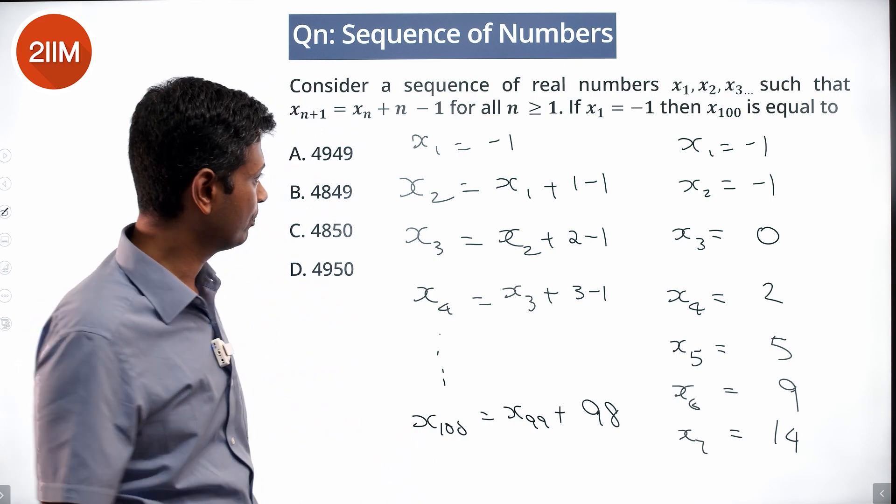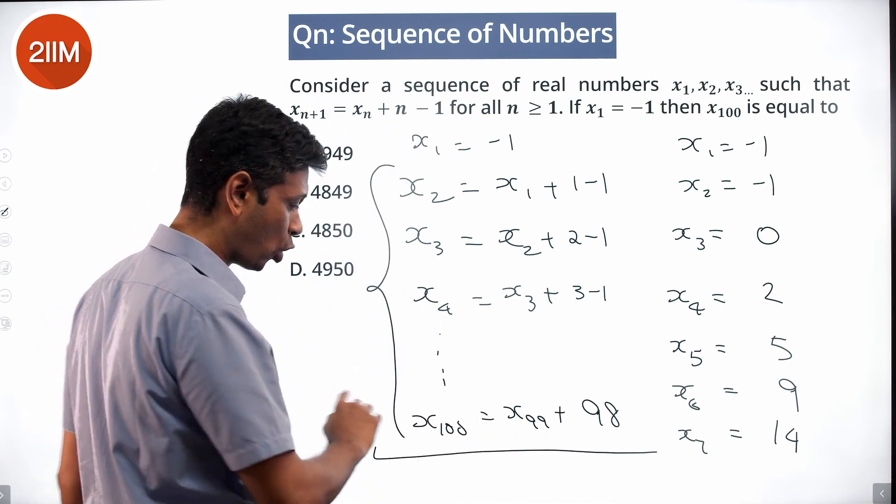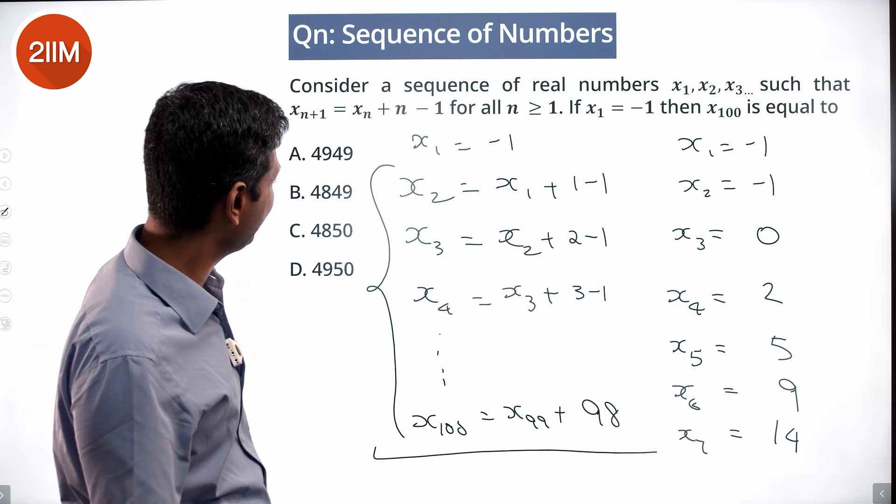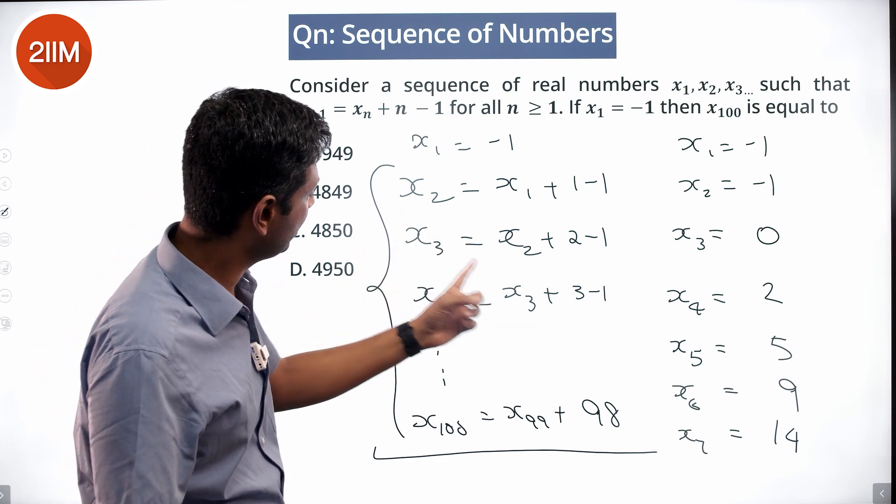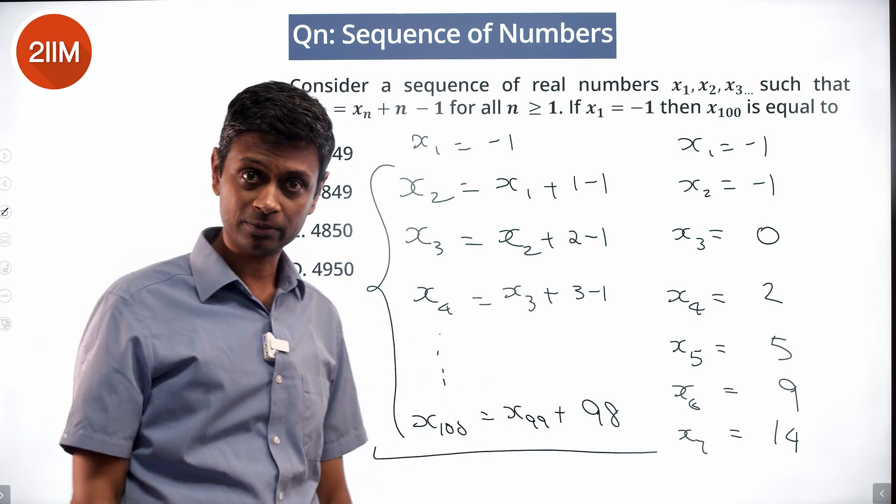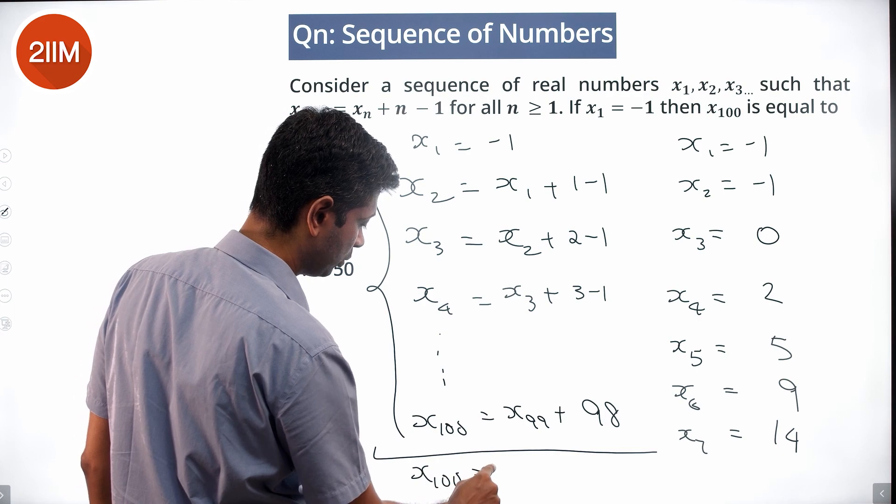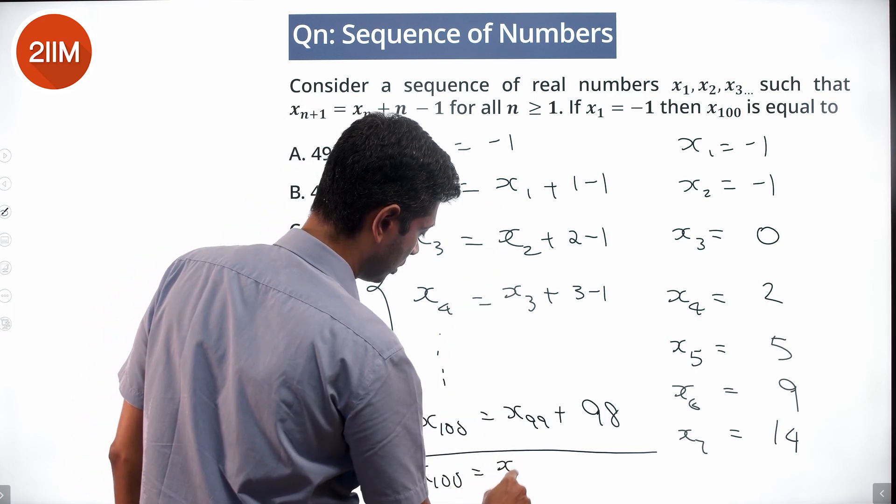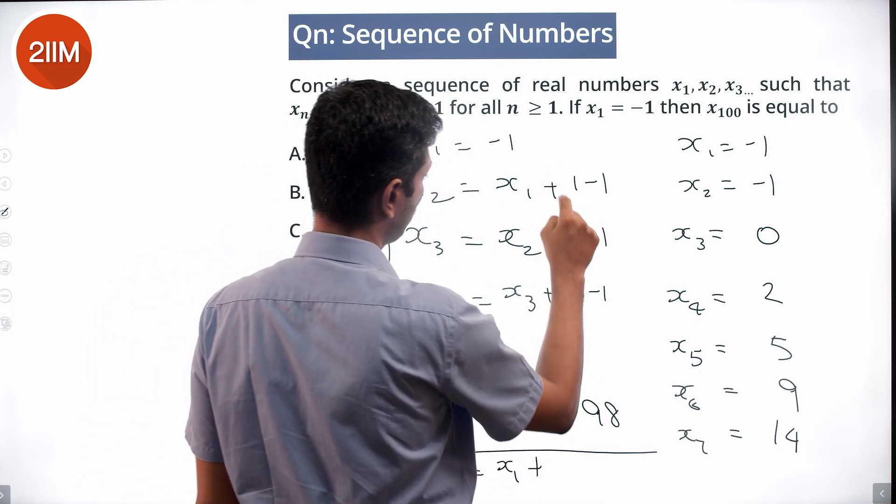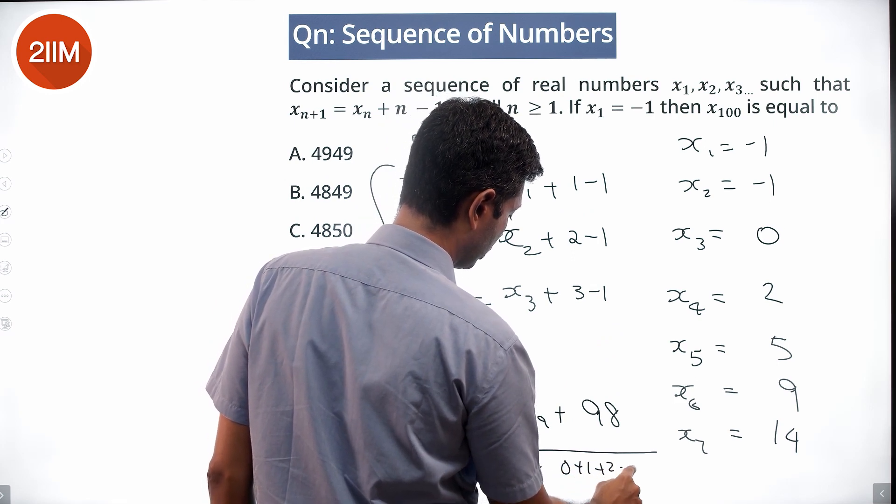You get a beautiful set of equations, and if you add all of them up, there's x2 here and x2 here, x3 here and x3 here, x4, x4, all the way to x99 - everything will get cancelled. We get quite simply x100 equal to x1 + 0 + 1 + 2 all the way till 98.